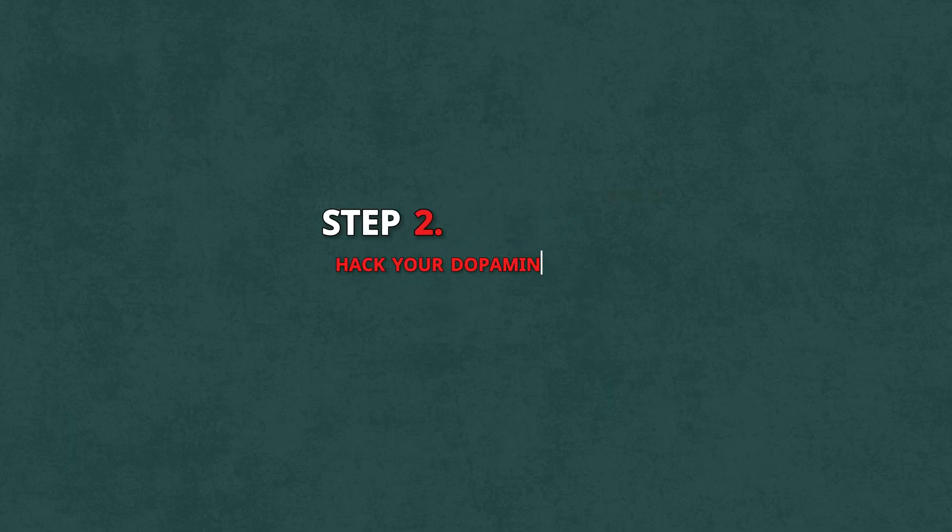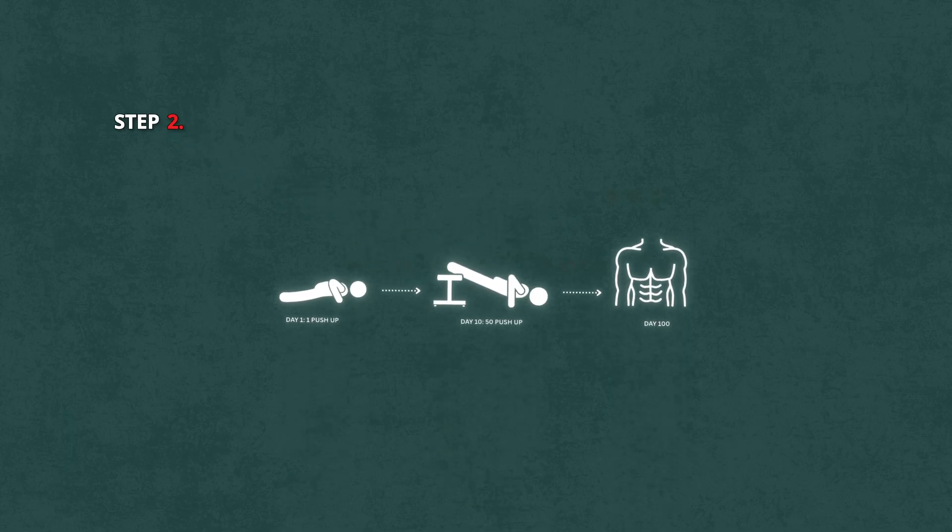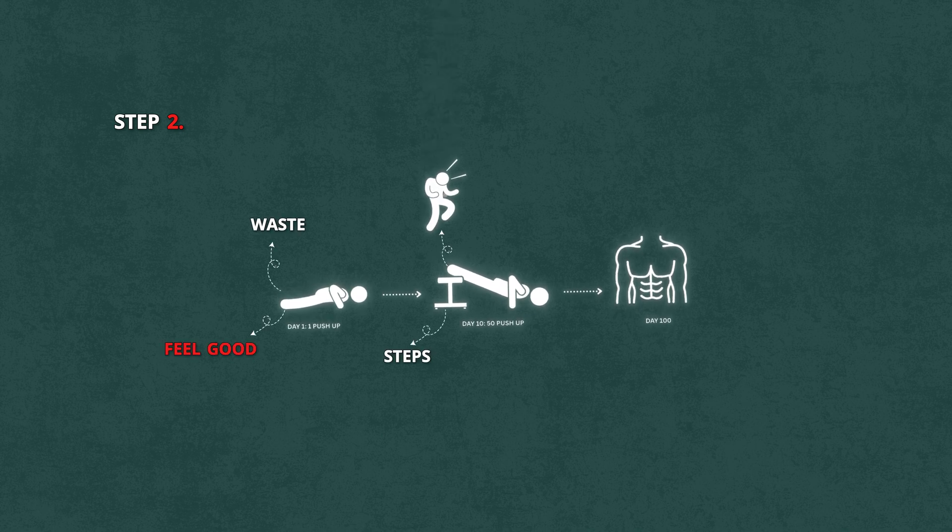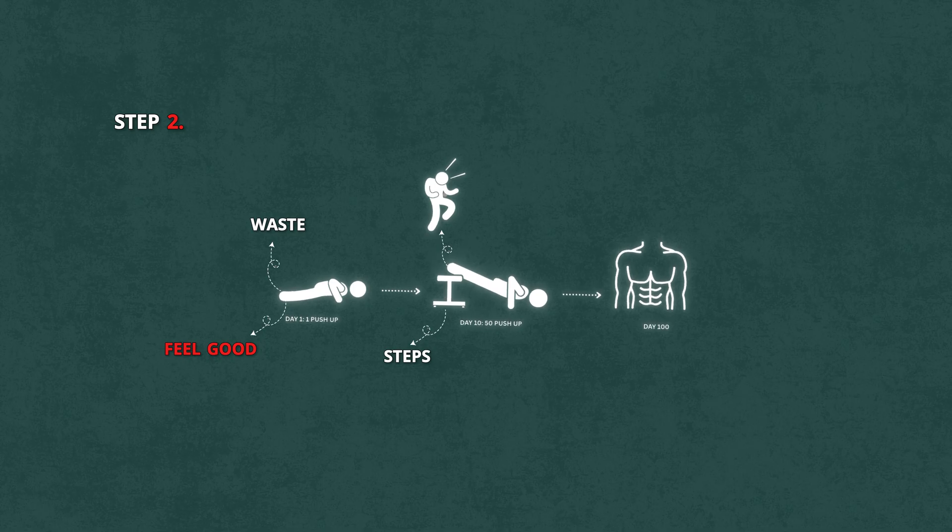Step two, hack your dopamine system. Break the goal into micro wins. Don't wait six months to feel good. Celebrate small steps. Write the paragraph. Do the workout. Send the email and reward yourself immediately.